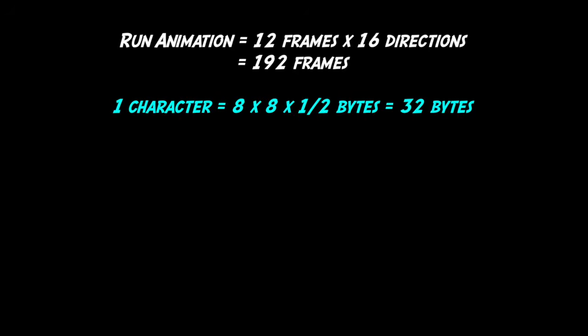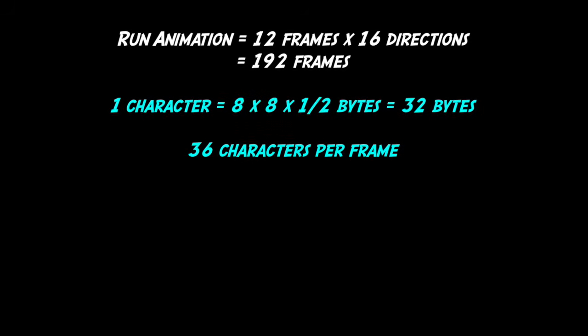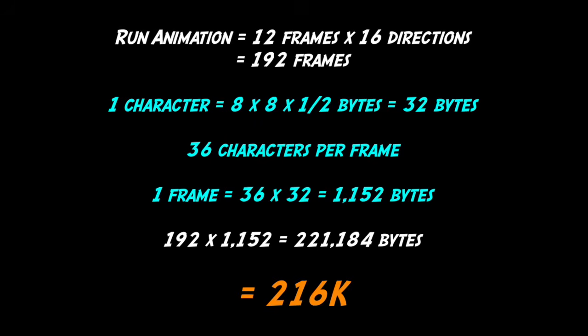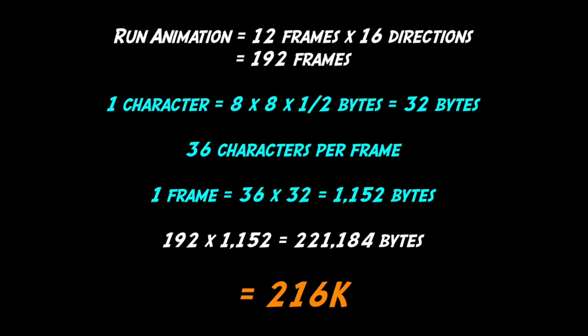One character takes 32 bytes of memory to store. So if we multiply it all out, we find that the run animation alone takes 216k of cartridge space. Ouch.